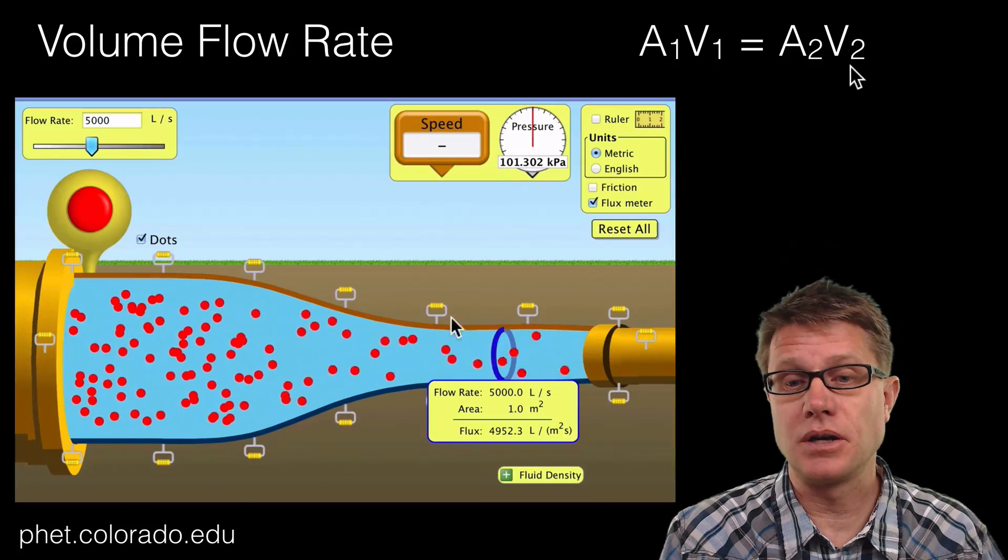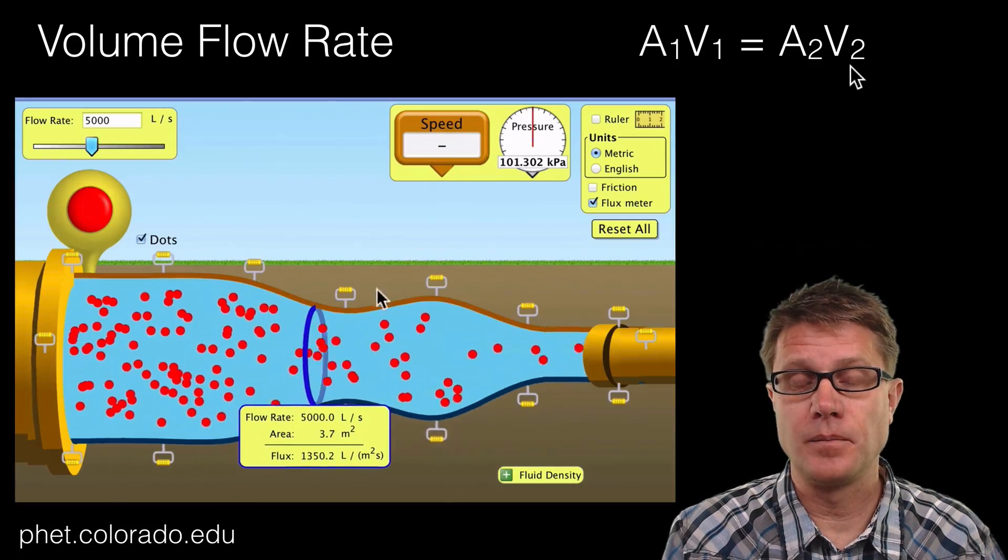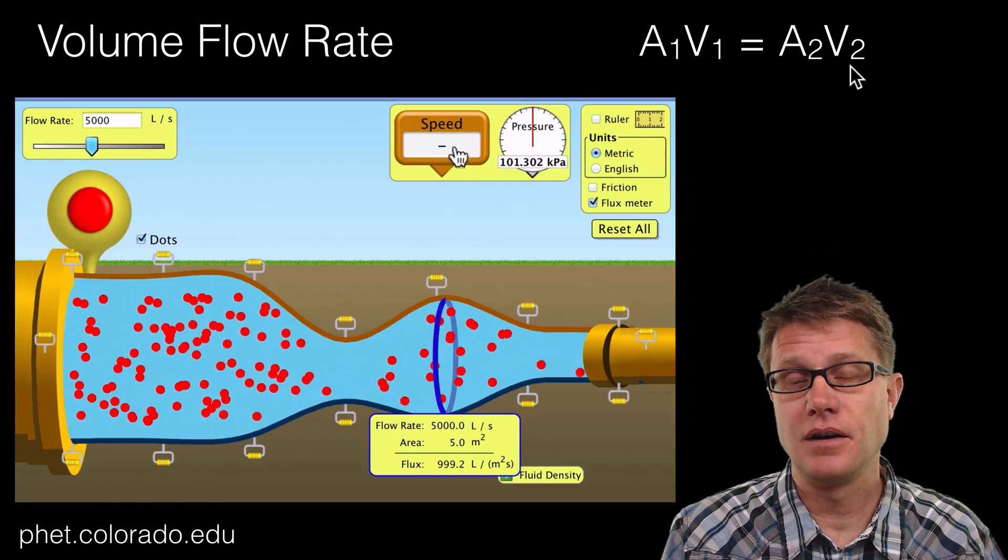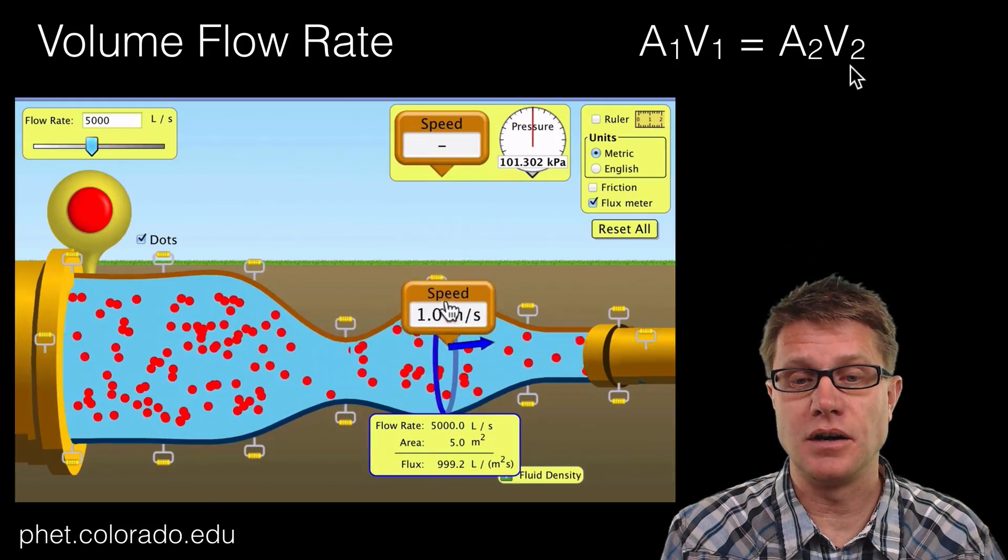What would happen if I were to give you a totally different cross-sectional area? Let us say the cross-sectional area at this point is 5. Then we should see a speed of 1.